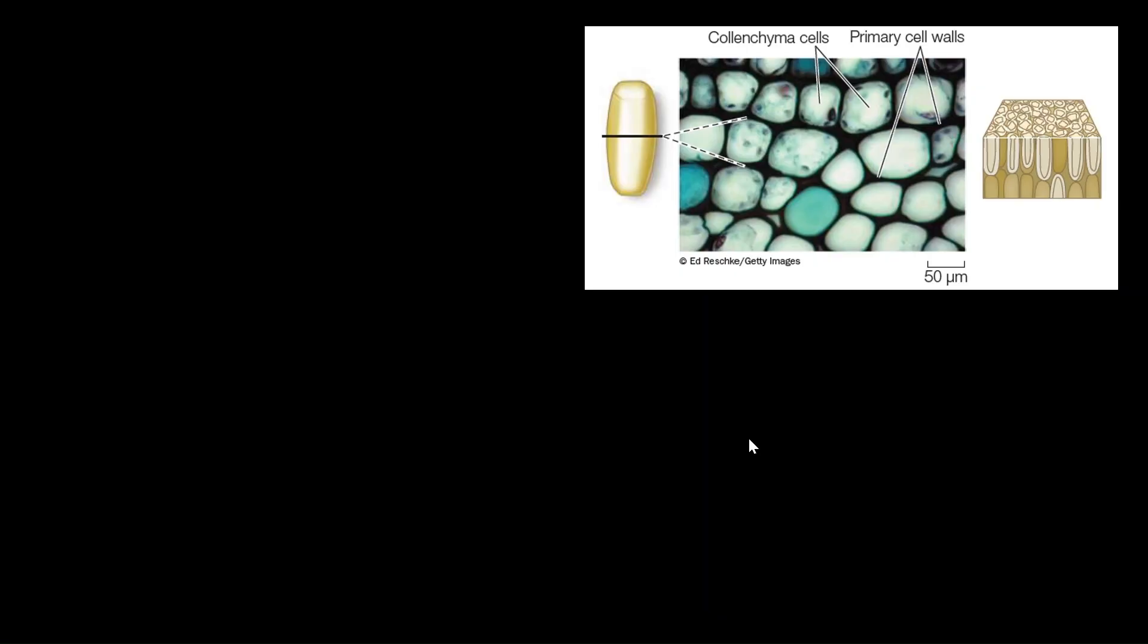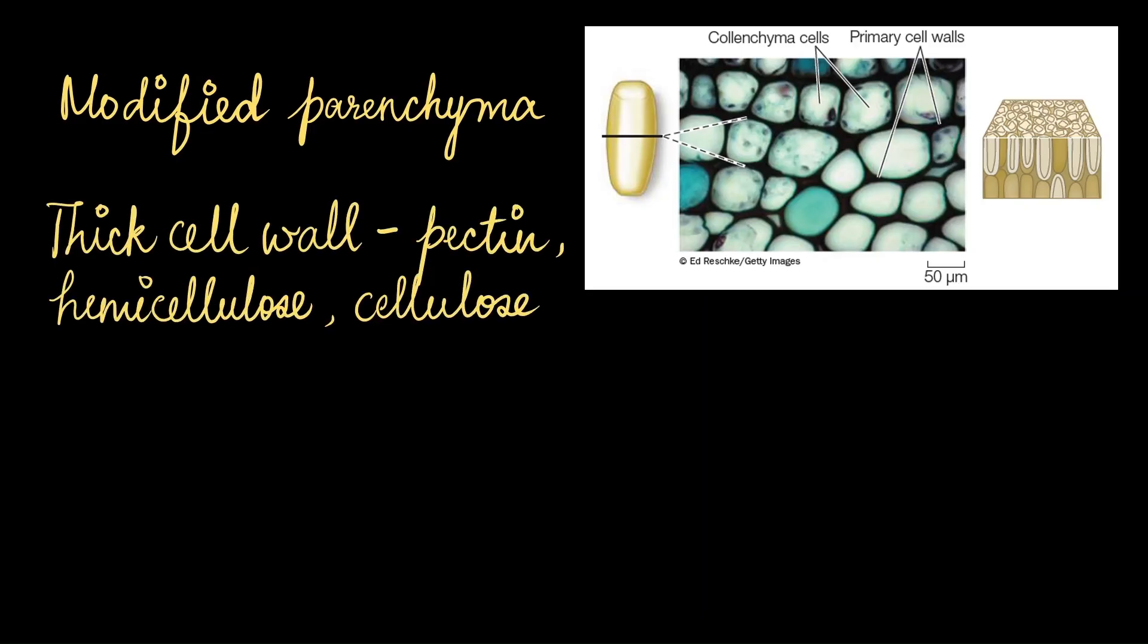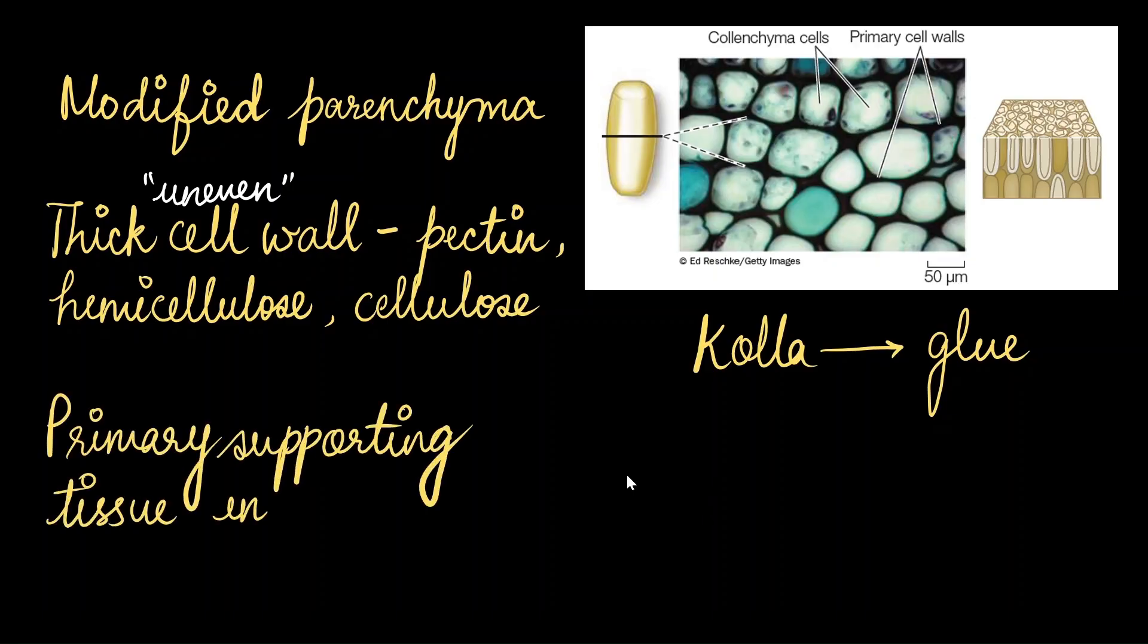Collenchyma is not a widespread tissue in the body of a plant. They are modified parenchyma. Unlike parenchyma cells, they have a very thick cell wall due to the deposition of pectin, hemicellulose, and cellulose. These depositions are uneven. The term collenchyma has a root word cola meaning glue. It indicates the ability of these cells to bring together the surrounding tissues. Primarily, they are the supporting tissues in dicot plants only.